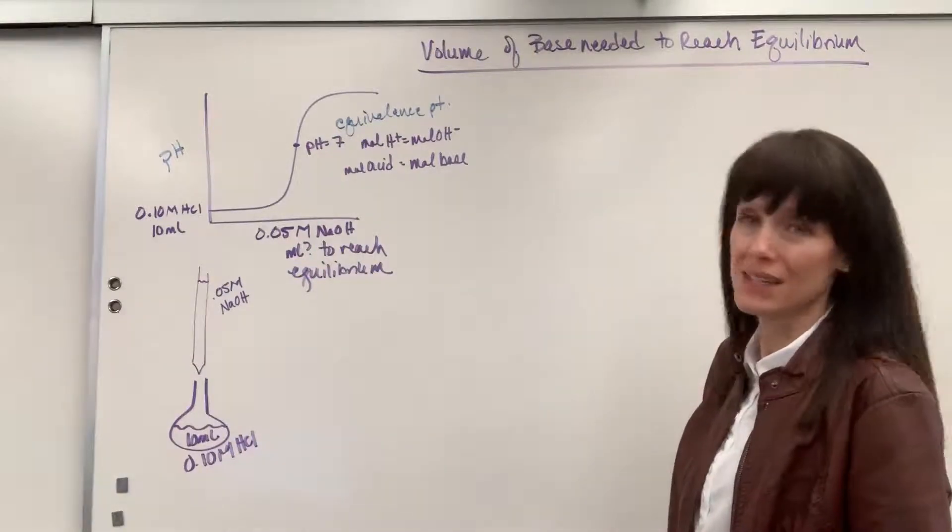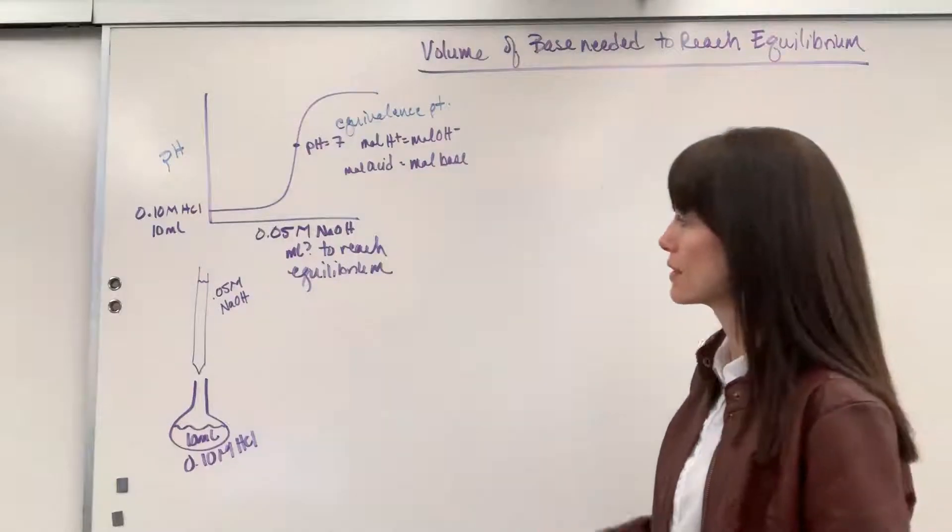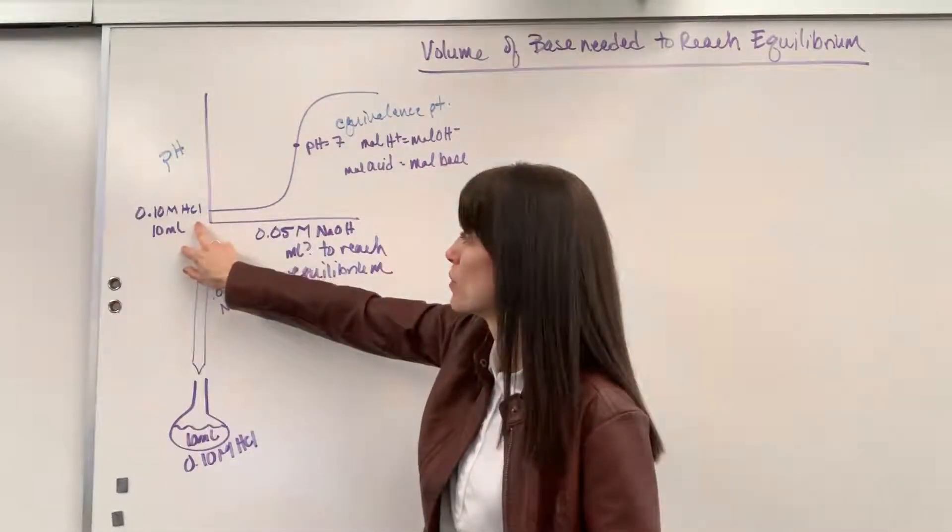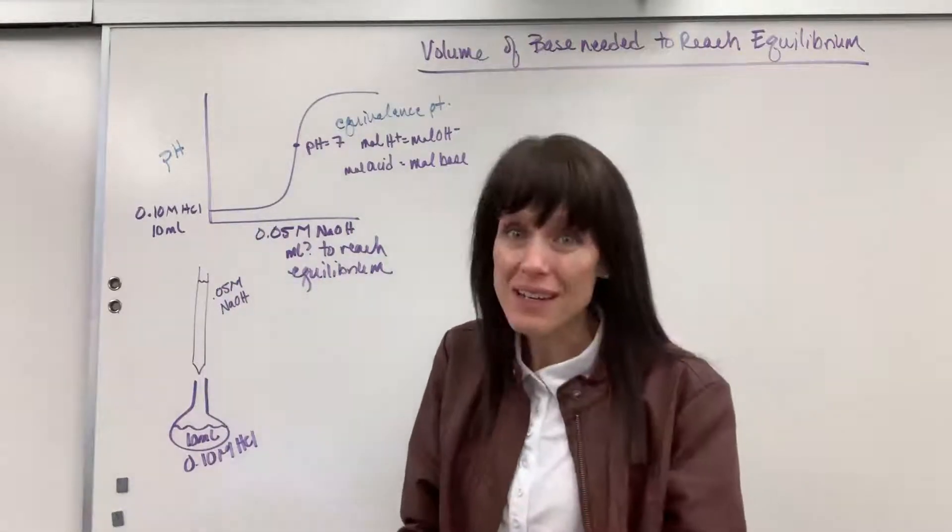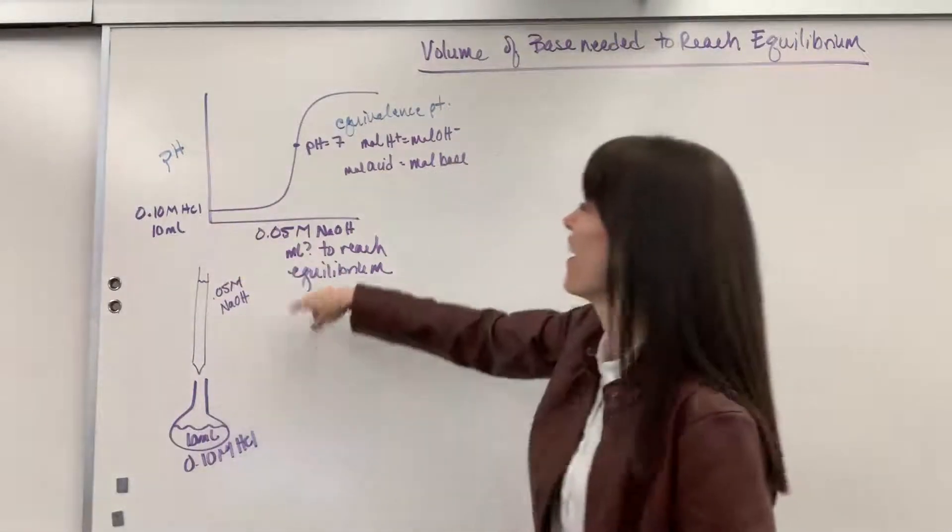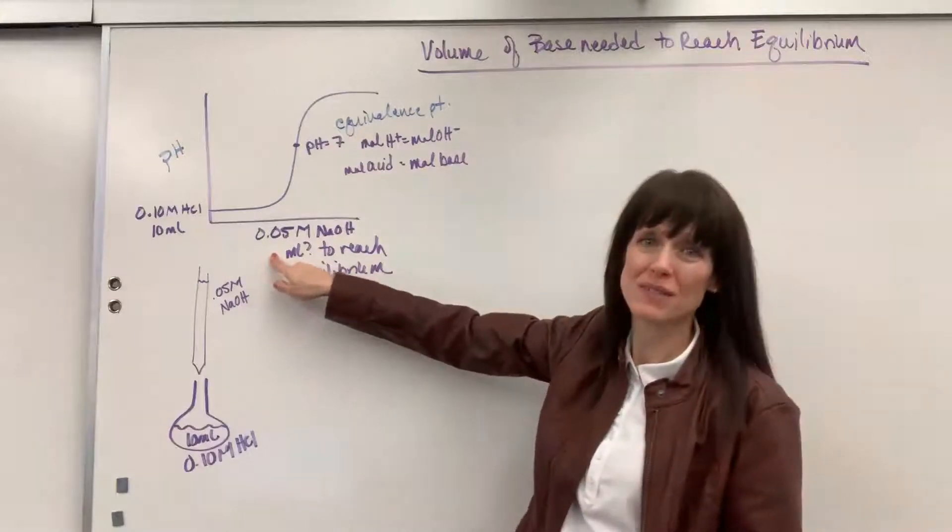In that case, it's our analyte equals the moles of the base. So really, really neat, moles and moles equal each other. Well, look at this. If I have molarity and volume of hydrochloric acid, I can find the moles. And at equilibrium, the moles of the acid are the same as the moles of the base.